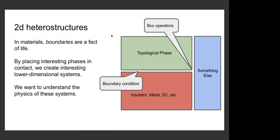The topic of this talk is boundary conditions of topological phases. One can think about a boundary condition as coming from a heterostructure, where one has a topological phase occupying some part of the structure, and then some other kind of material — perhaps a trivial insulator or maybe a metal. Where we have these junctions between different phases, it looks like a boundary condition from the topological phase. Where two junctions join, you might have something that looks like a quantum mechanical system describing boundary condition changing operators. We want to understand the physics of these systems.